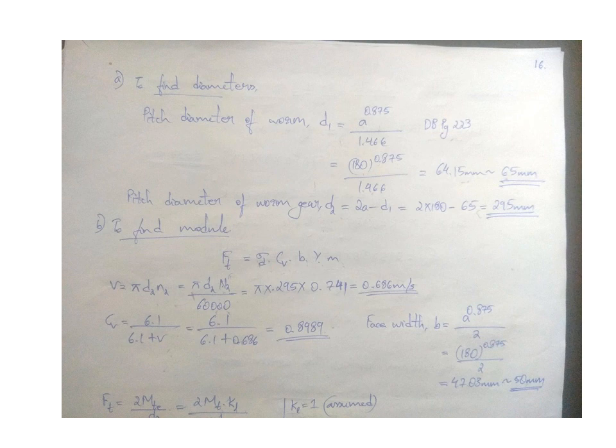By standardizing it will be like 65 millimeter. The pitch diameter of worm gear d2 equals 2A minus d1, which is 295 millimeter. Our next step was to find the module.